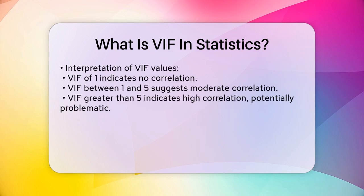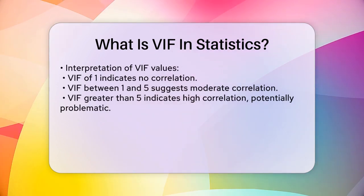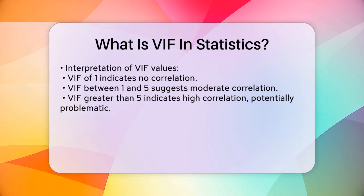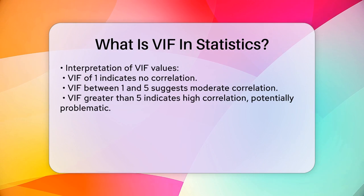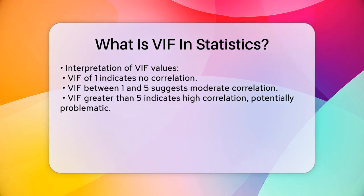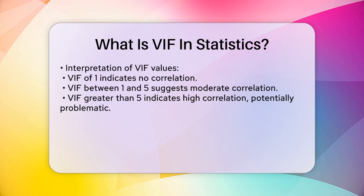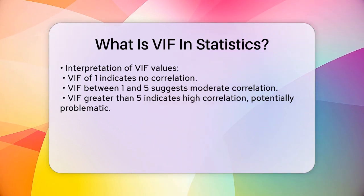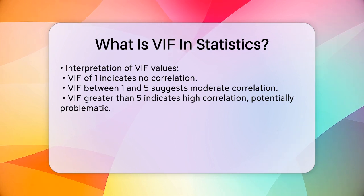A VIF of 1 means the variable is not correlated with any other variables, which is ideal. However, as the VIF increases, it indicates that the variable is highly correlated with other variables, which can make your regression results less reliable. For instance, a VIF of 1.9 means the variance of the coefficient is 90% larger than it would be if there was no correlation.